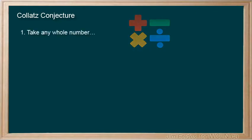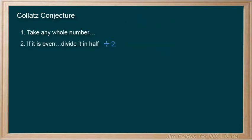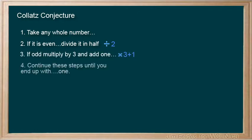Take any whole number. If it is even, divide it in half. If odd, multiply by 3 and add 1. Continue these steps until you end up with 1. Okay, this sounds simple.